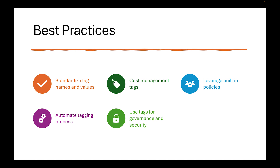The last best practice is tagging for governance and security, which is really important. You want to identify critical resources — you might have a 'critical' tag to prioritize monitoring and apply stricter security controls, or a compliance tag like GDPR or HIPAA to ensure your environment is doing what it needs to do.